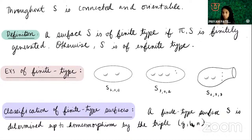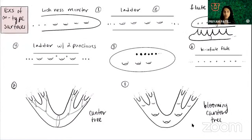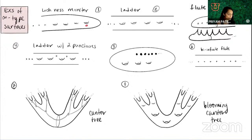Now we're going to transition to infinite type surfaces, which are a little bit more complicated, but still fun and beautiful. The first surface is the Loch Ness monster surface — an infinite genus surface, countably infinite genus, where your donut holes are going off to one end at infinity. The second example also has infinite genus, but the genus tracks out to two different ends of the surface — two different ways of going off to infinity.